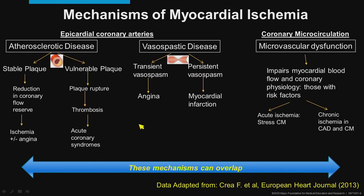But there are other reasons you could get decreased blood flow to the coronary circulation. That can be due to vasospastic disease, where the artery spasms, or disease of the microcirculation — microvascular disease with small vessels that are not well seen on coronary angiography. But all these mechanisms can actually overlap.